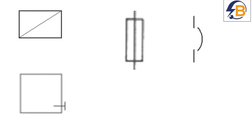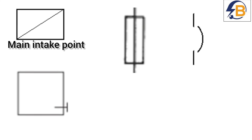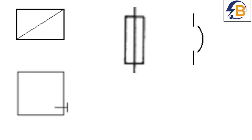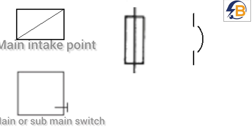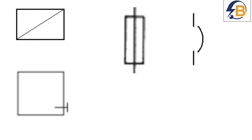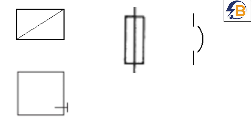Next we have the main supply intake point. We use this symbol to represent a consumer unit. This also represents the main or sub-main switch. These two are sometimes used interchangeably. This symbol represents a fuse, and then this represents a circuit breaker.